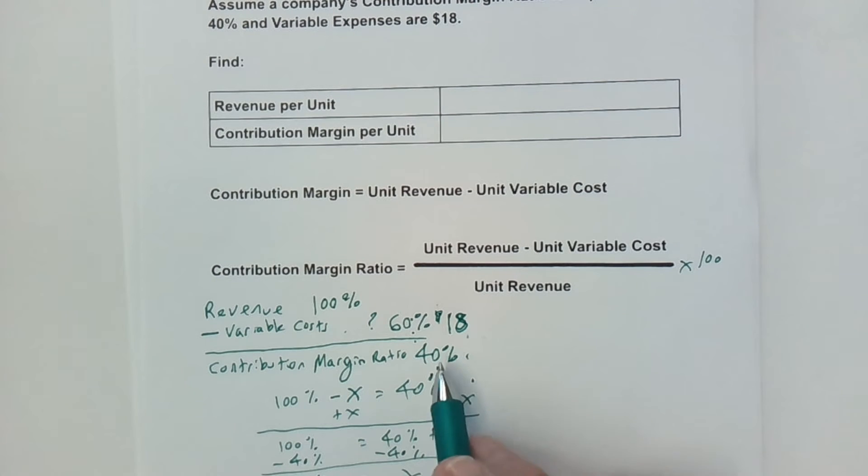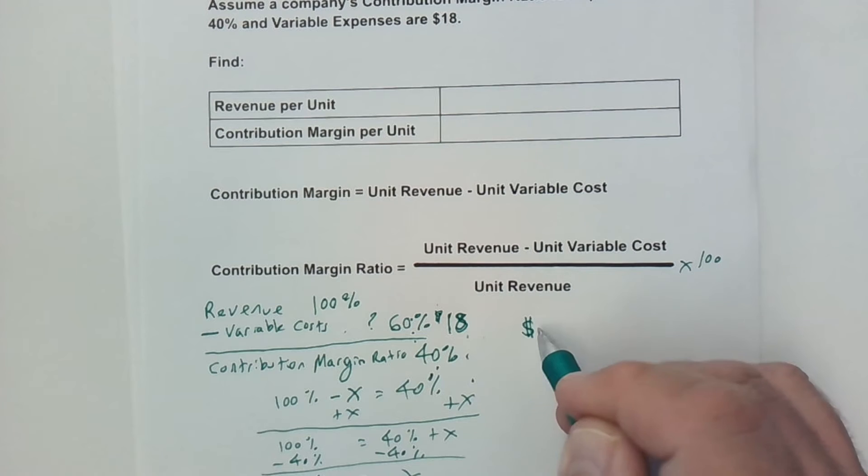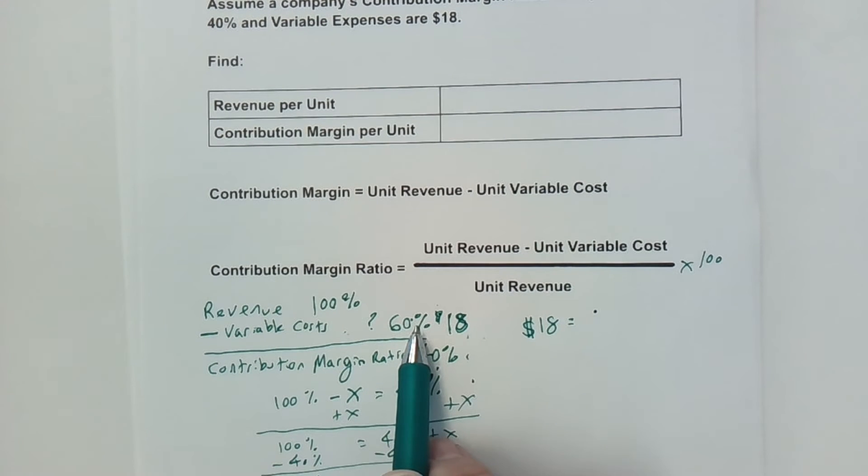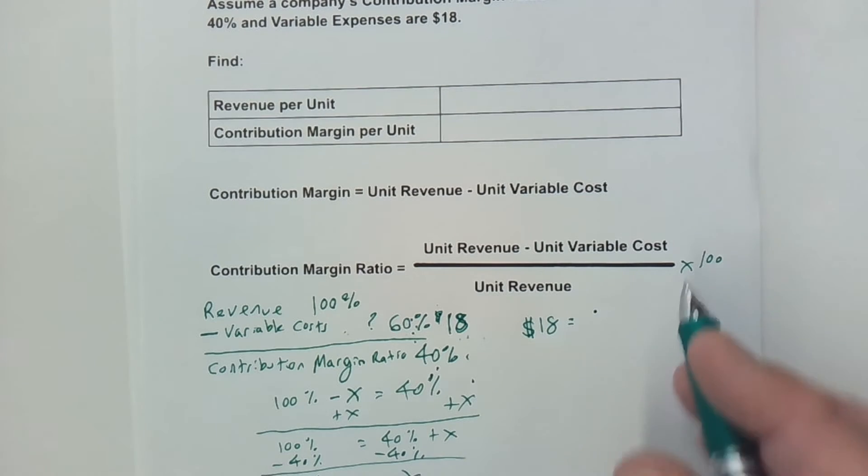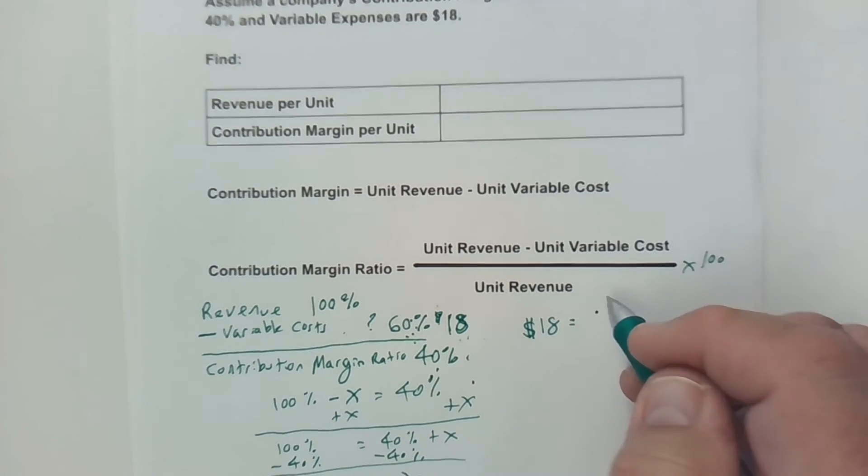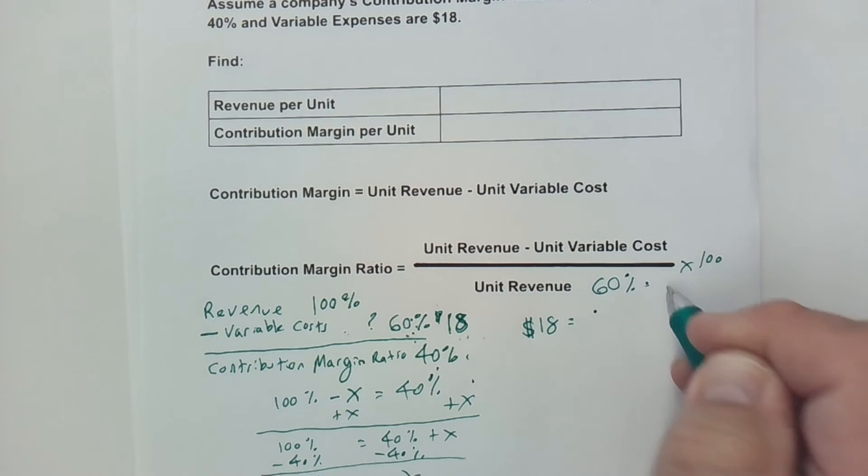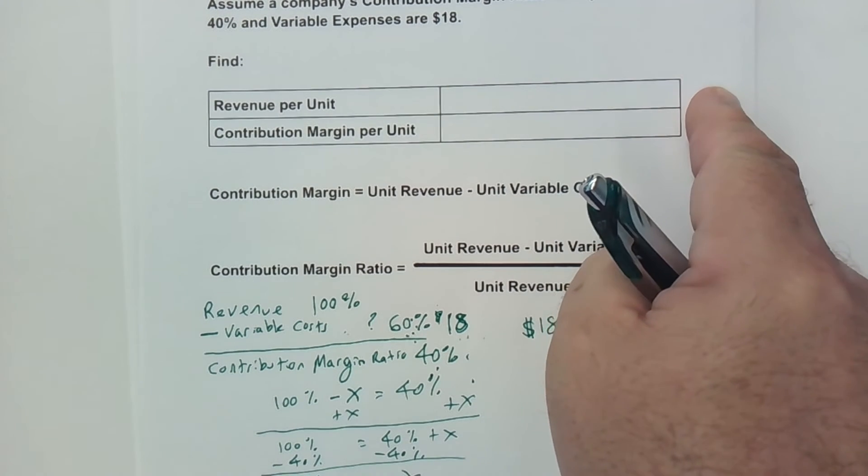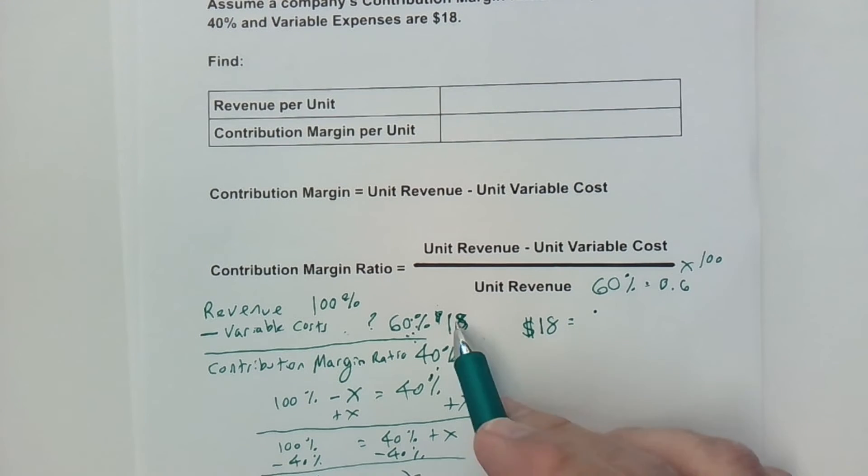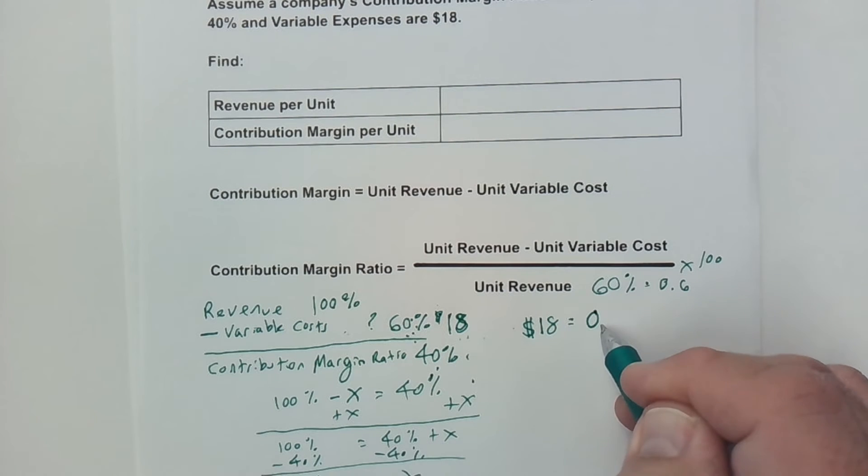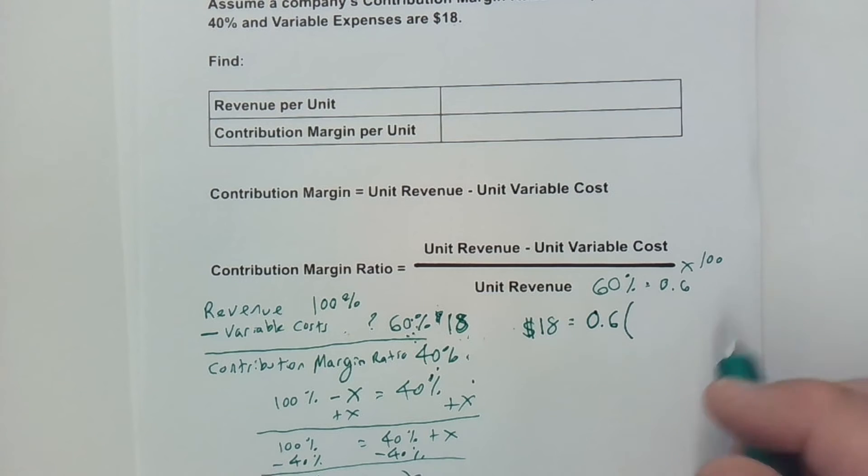We're going to do a little bit more algebra. We know that the $18 is equal to our contribution of 60%. 60% of the revenue because the revenue is 100%. 60% of that is $18. If it's 60%, we know that 60% can be rewritten as a decimal, 0.6.